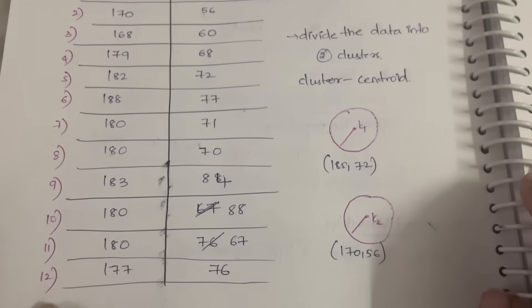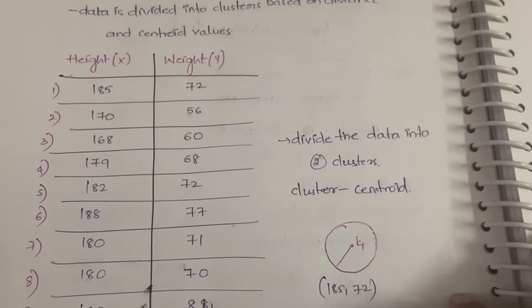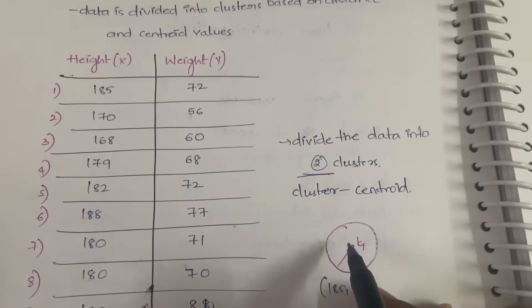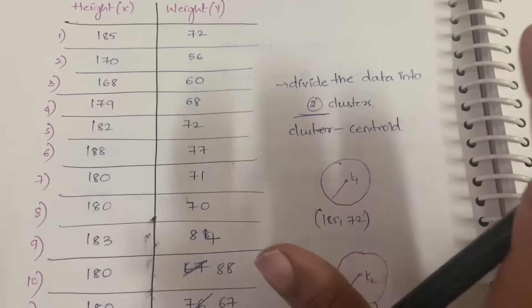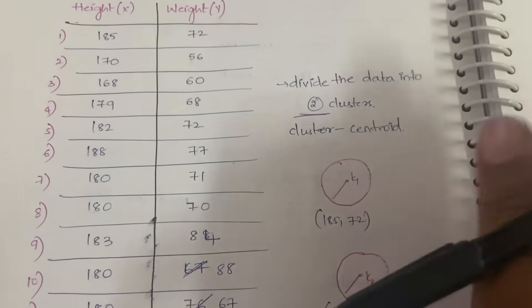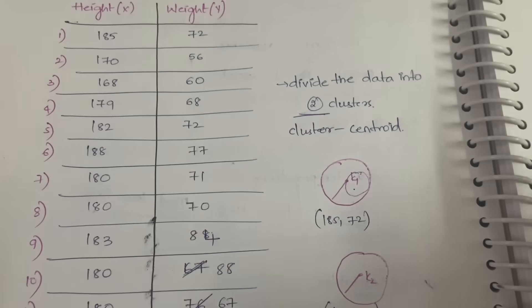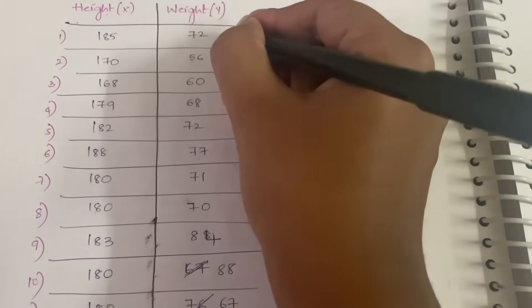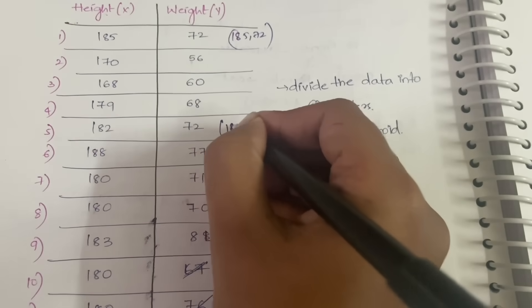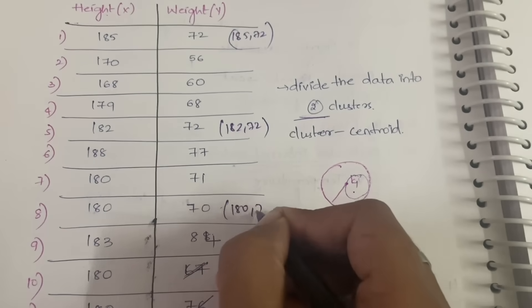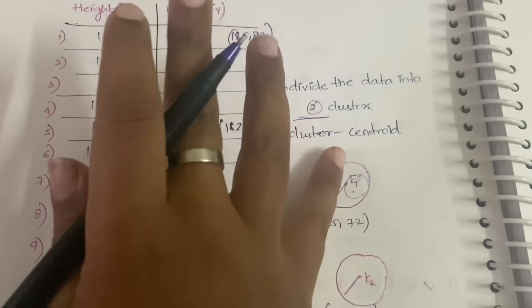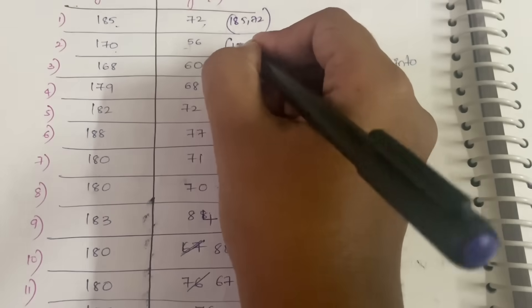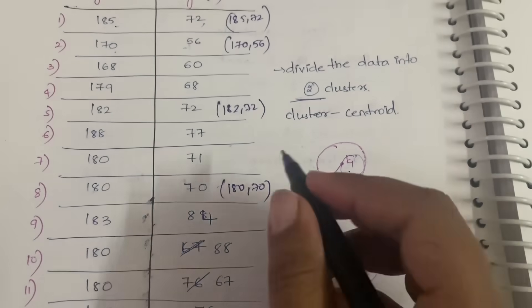We have 12 values in total. Our main goal is to divide the data into two clusters. Each cluster will have a centroid. Initially, you assign centroids to these clusters by randomly picking any two ordered pairs from the data — for example, 185 comma 72, or 182 comma 72, or 180 comma 70. Here we have taken 185 comma 72 for k1 and 170 comma 56 for k2.